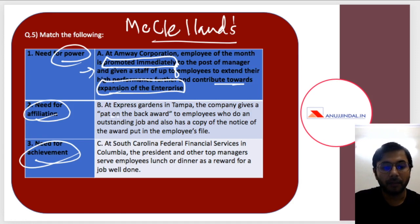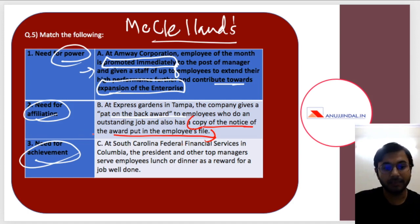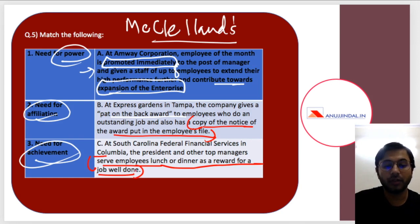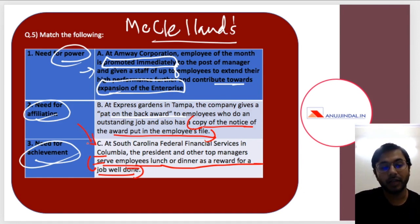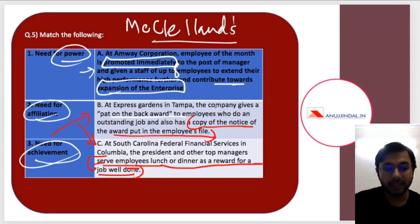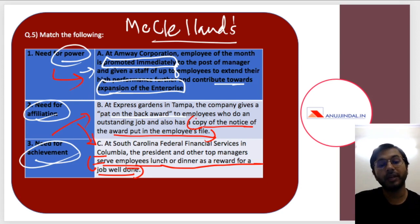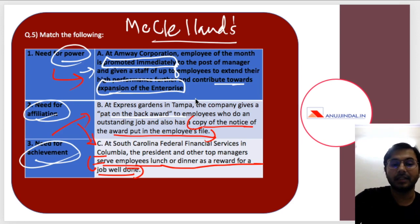At Express Gardens, the company gives a 'pat on the back' award to employees who do an outstanding job, and a copy of the award notice is put in the employee's file. At South Carolina Federal Financial Services in Columbia, the president and other top managers serve employees lunch or dinner as a reward for a job well done — this is affiliating with employees, showing management is in service of staff. So: example 2 relates to need for affiliation (C), example 3 to need for achievement (B), and example 1 to need for power (A) because promotion means being given more power.